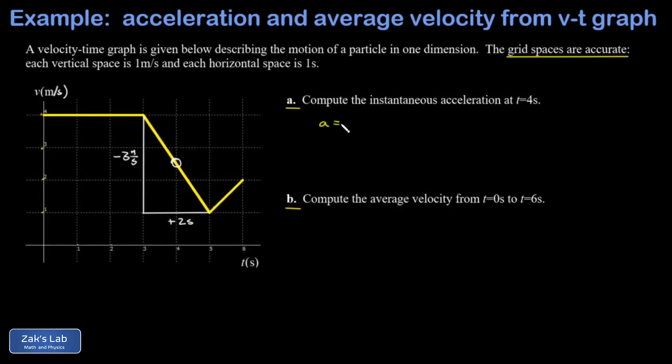I could be more formal about it and say that a is going to be delta v over delta t, the slope of the graph. And my final velocity here is one meter per second, my initial velocity was four meters per second, my final time five seconds, my initial time is three seconds.